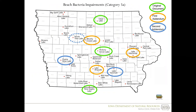This water quality improvement plan is the second addendum, or part three, to the Statewide Beach Bacteria TMDL. Part one, which was our original document, included three lakes: Clear Lake, Hickory Grove Lake, and Nine Eagles Lake, which are circled in green. This document was submitted and approved by the EPA in 2020. The original document and video presentation includes more detailed background information, and a link will be provided below.